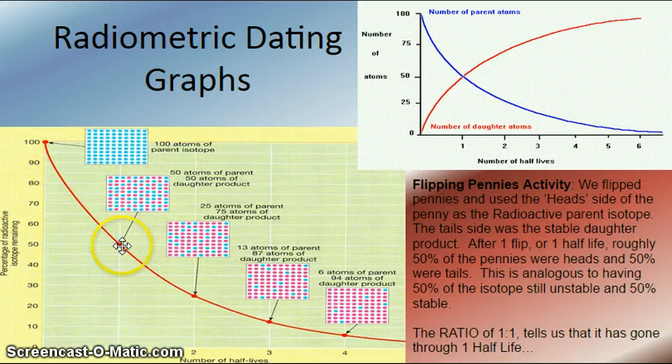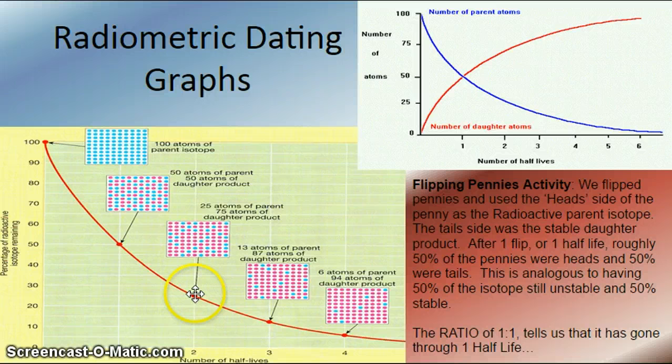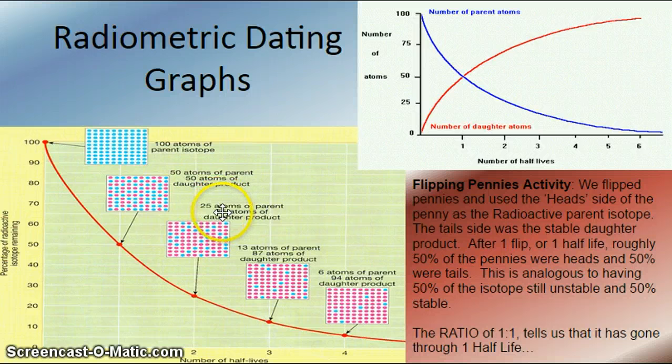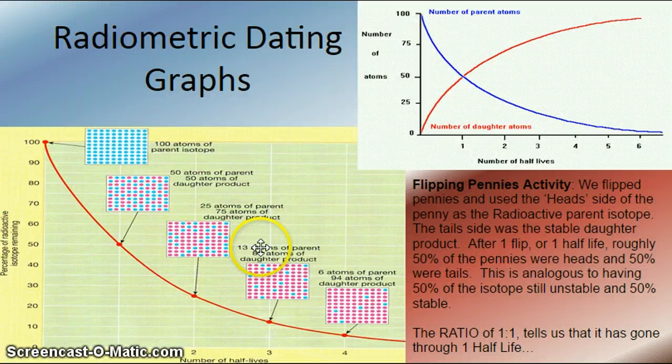So through one half-life, I have a 50-50 ratio, or one to one ratio. Through two half-lives, I have three daughter products to one parent, so it's a three-to-one ratio. 75 to 25 is a three-to-one ratio. And after three half-lives, I have seven parts daughter, one part parent, or radioactive, or unstable.